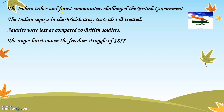The Indian tribes and forest communities also challenged the British rule. Their livelihood was dependent on forest resources, but British laws put restrictions on it. Tribes are the Adivasis who live in the forest. The Britishers tried to impose heavy taxes on the Indian tribes. The Indian sepoys — soldiers — were also ill-treated by the Britishers. Their salaries were less compared to those of the British soldiers, and all this led to anger which burst out in the freedom struggle of 1857.